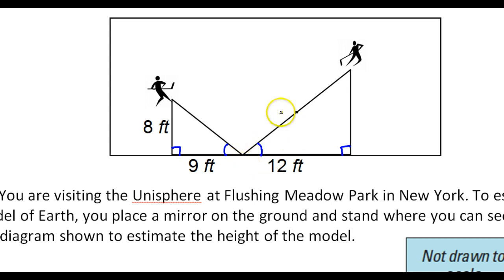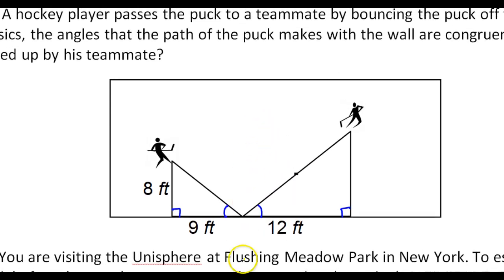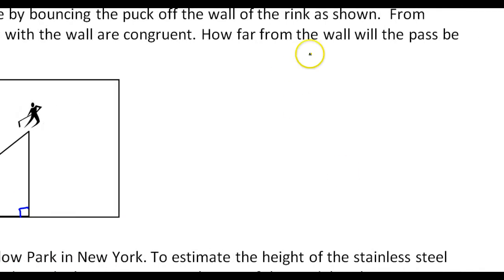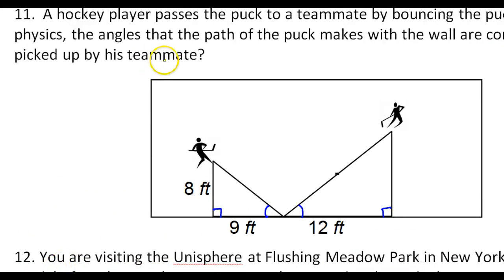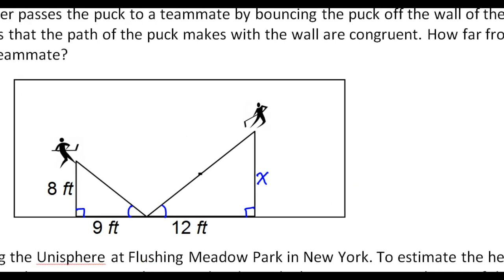In other words, these two angles are going to be the same. And clearly we have 90 degree angles right here. So already that's angle angle similarity. So these two triangles are going to be similar. So we can use that to answer the question, which is how far from the wall will the pass be picked up by his teammate? In other words, we're looking for this distance right here. How far from the wall will he receive the puck?